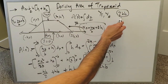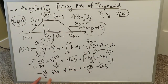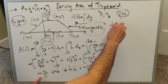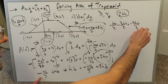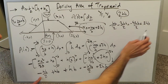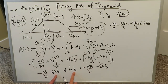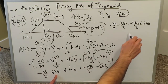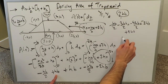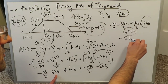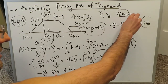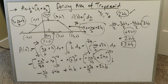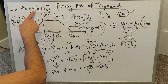Combining everything: −hb/2 − 3hb/2 = −4hb/2 = −2hb. Then +hb + hb + 2hb = +4hb. Adding −2hb + 4hb gives positive 2bh. So the area of this trapezoid is 2bh, which is exactly what we derived geometrically earlier.